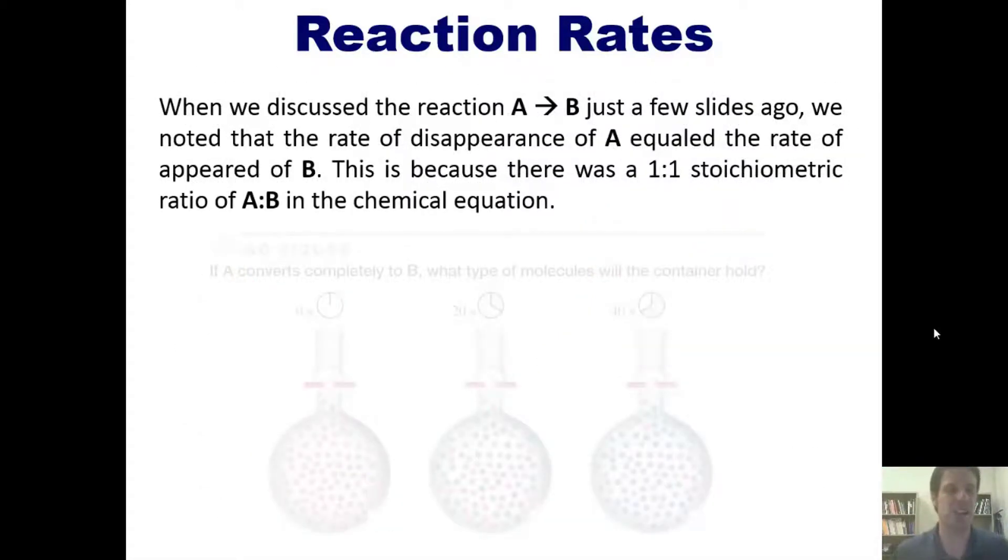When we discussed the reaction A converting to B just a few slides ago, we noticed that the rate of disappearance of A was equal to the rate of appearance of B. This is because there was a one-to-one ratio of A to B in the chemical equation. So that begs the question, what happens when there isn't a one-to-one relationship,